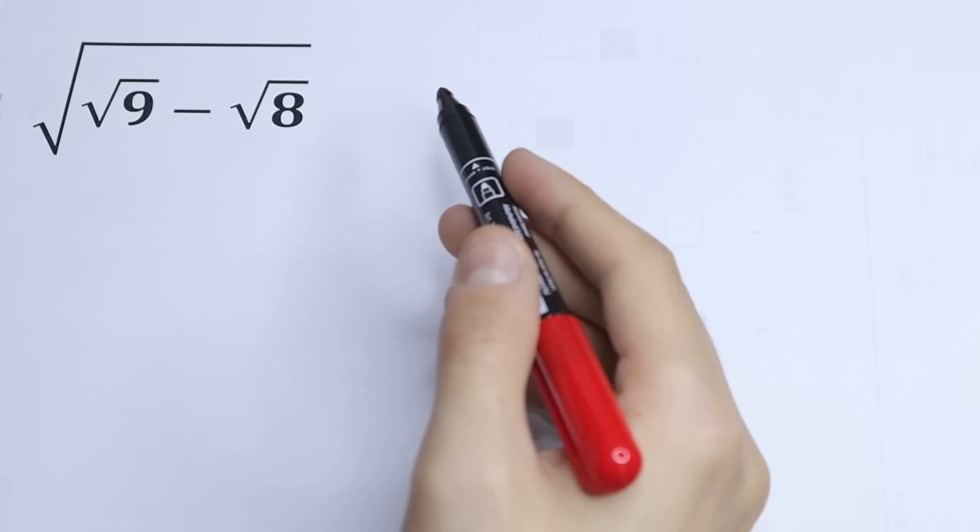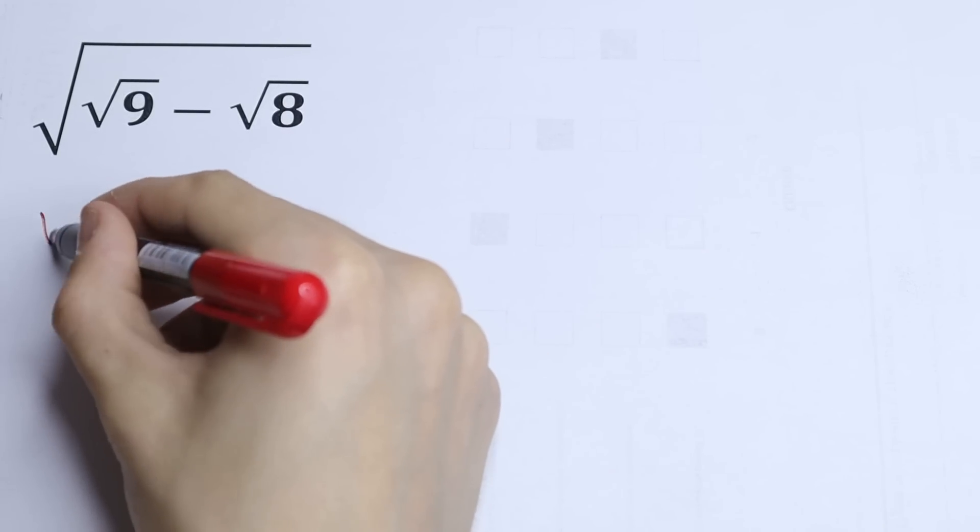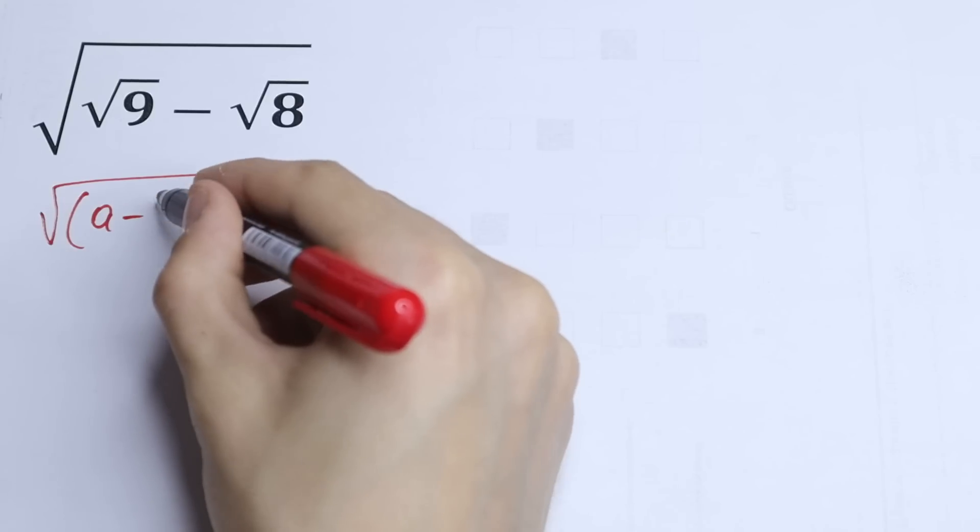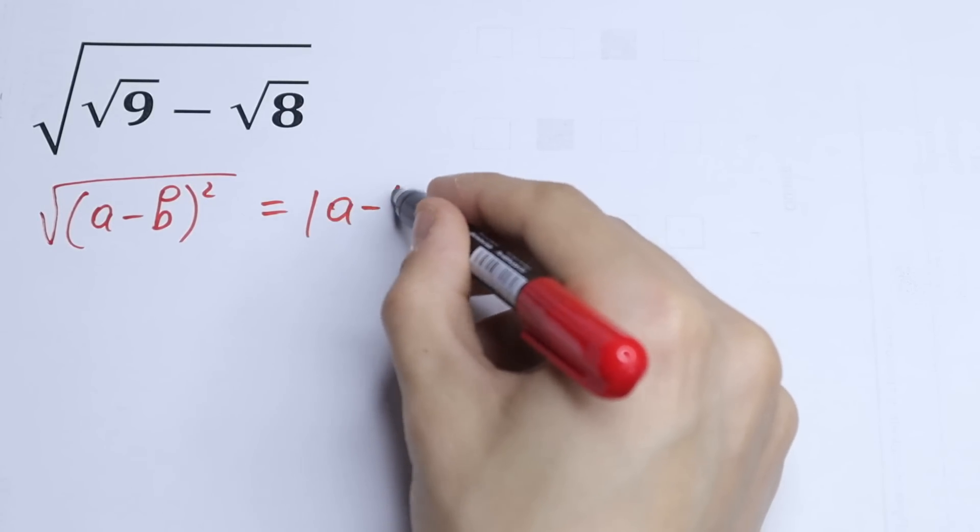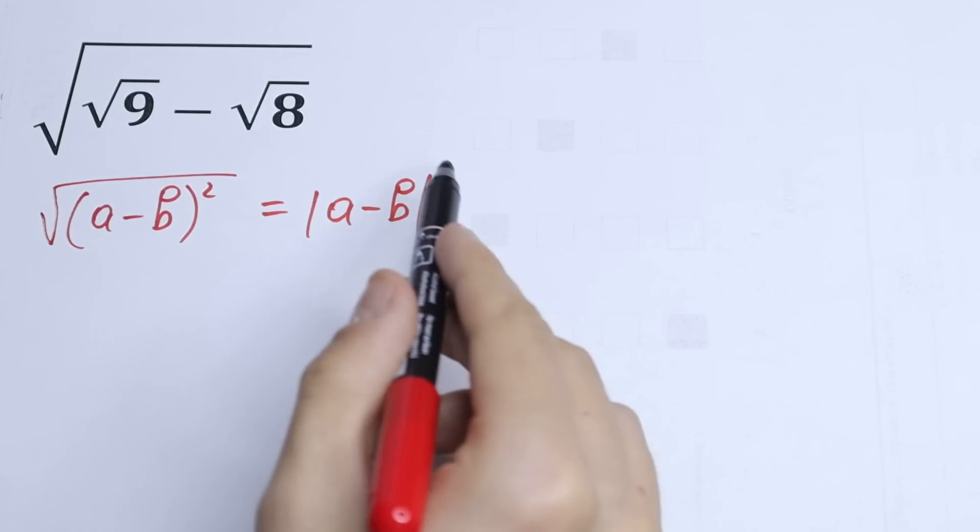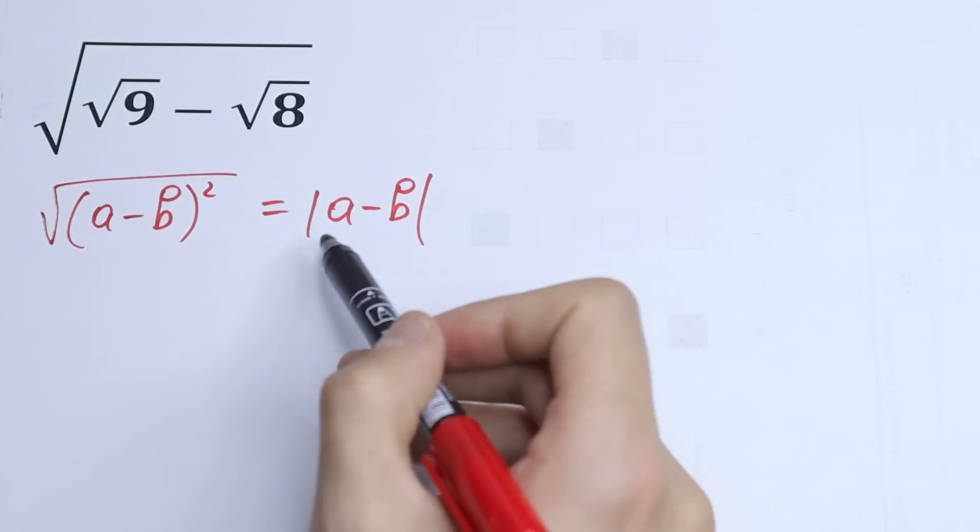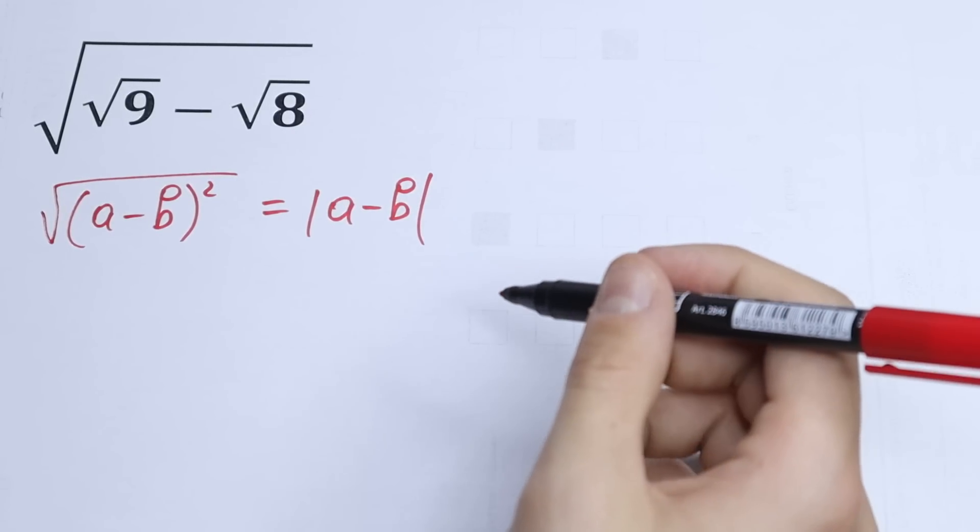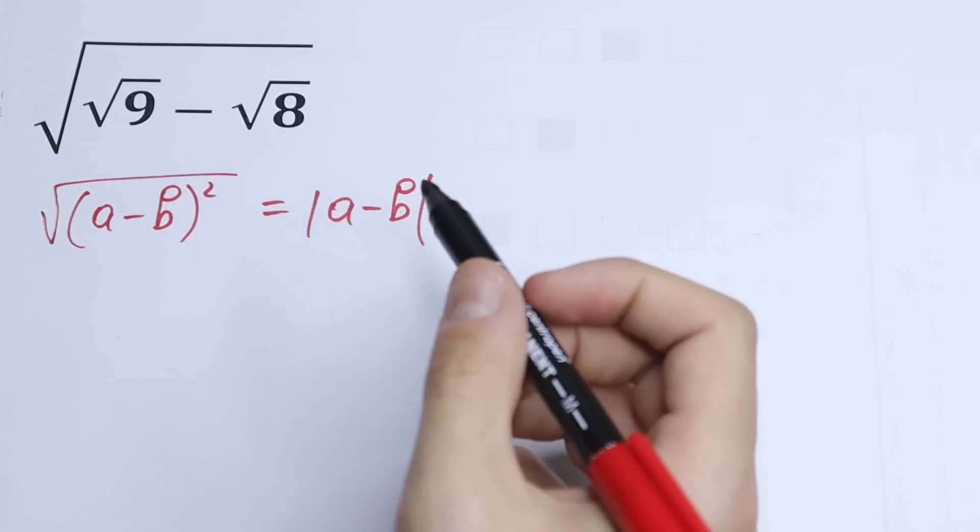The main idea to solve this kind of question is to create a formula inside our square root. Because if we have √(a-b)², we will have absolute value |a-b|. Then we don't have our square root, we just have our absolute value. Of course, if it is possible, we need to create a formula inside the square root.